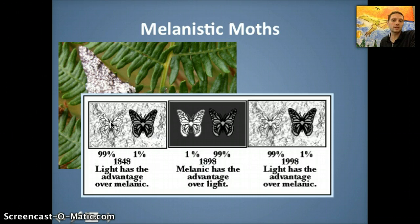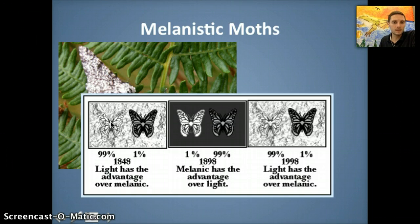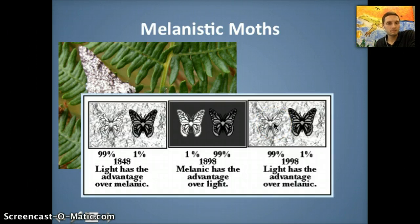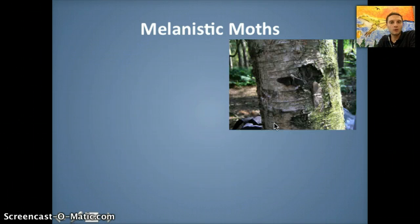That environmental change meant light moths were now less fit — they had less chance of surviving and reproducing — whereas dark moths had a better chance of surviving. Over a short period of time, the population shifted to being predominantly dark moths. As the Industrial Revolution concluded and the soot was cleaned up, by the 1990s trees had returned to their original colors, giving light moths a selective advantage again because they blend in without soot on the trees.